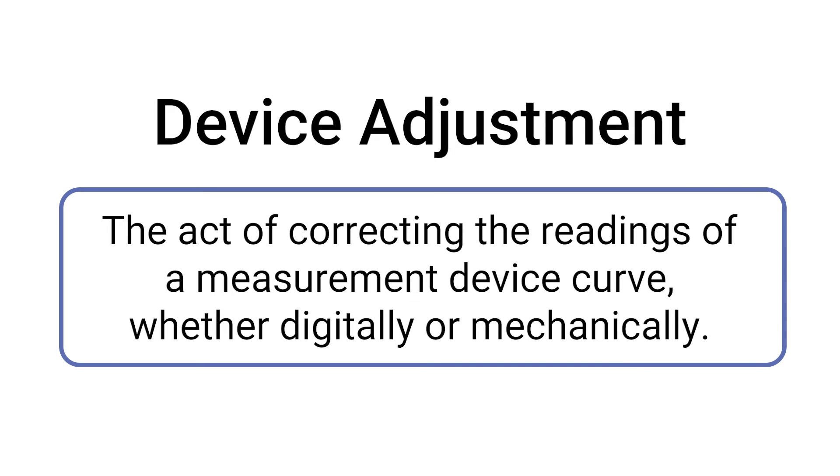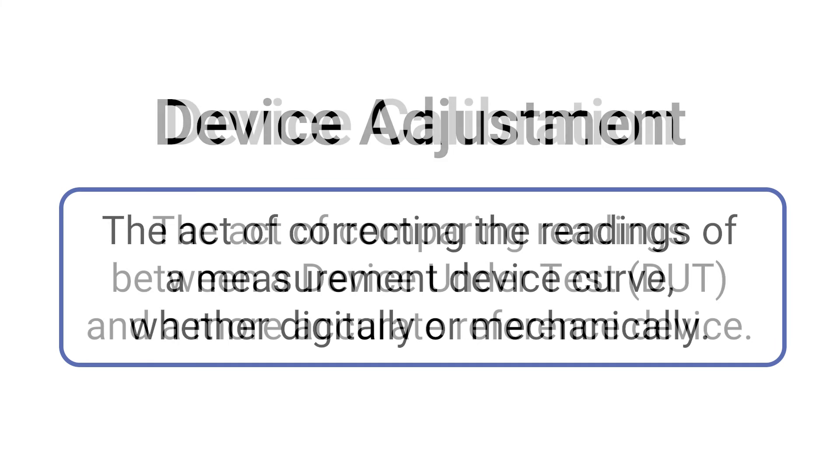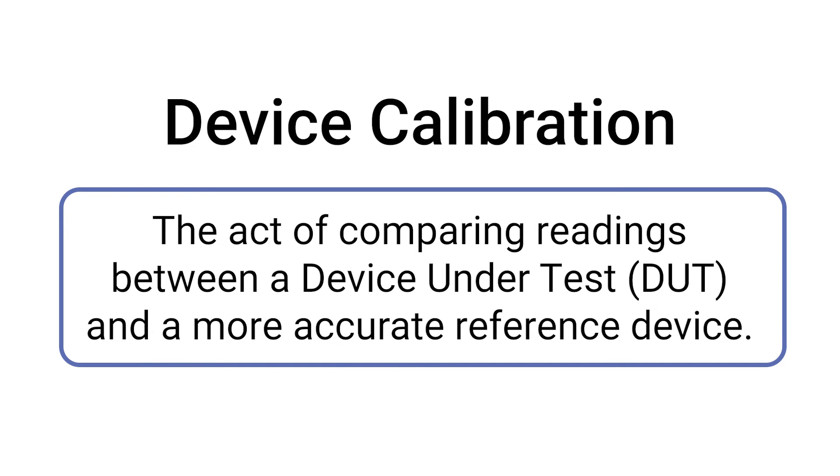This act of correcting the linearity of these measured values is what it means to adjust a measurement device. This is different from a calibration, where the device may already be within specification and not need to be adjusted.